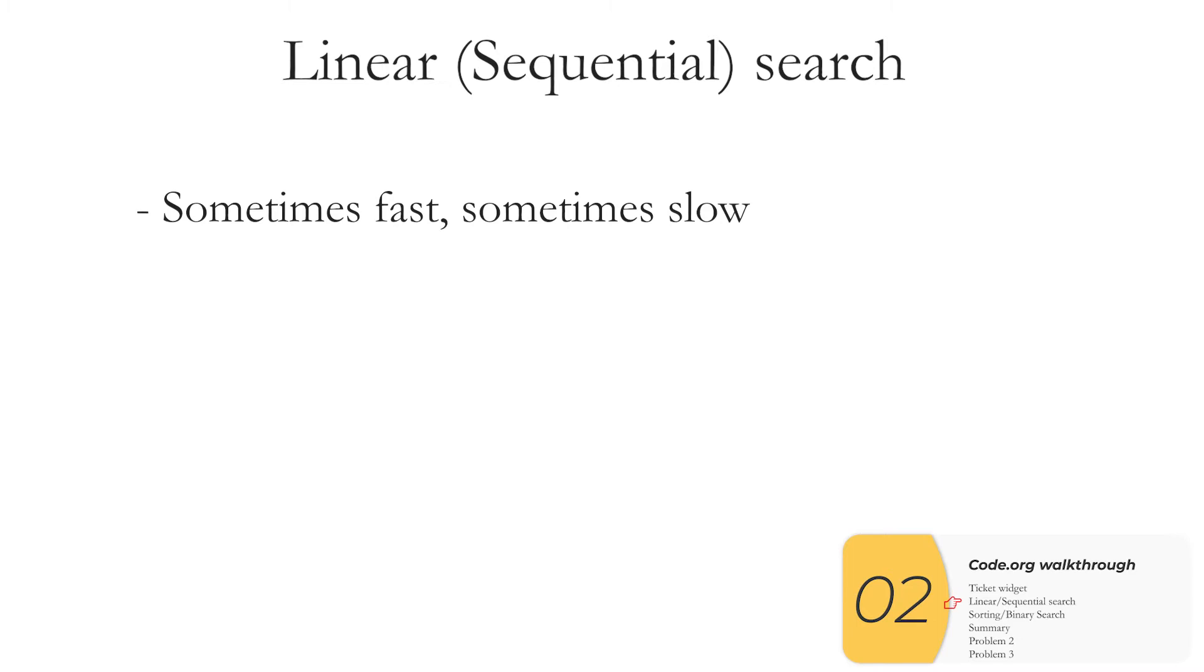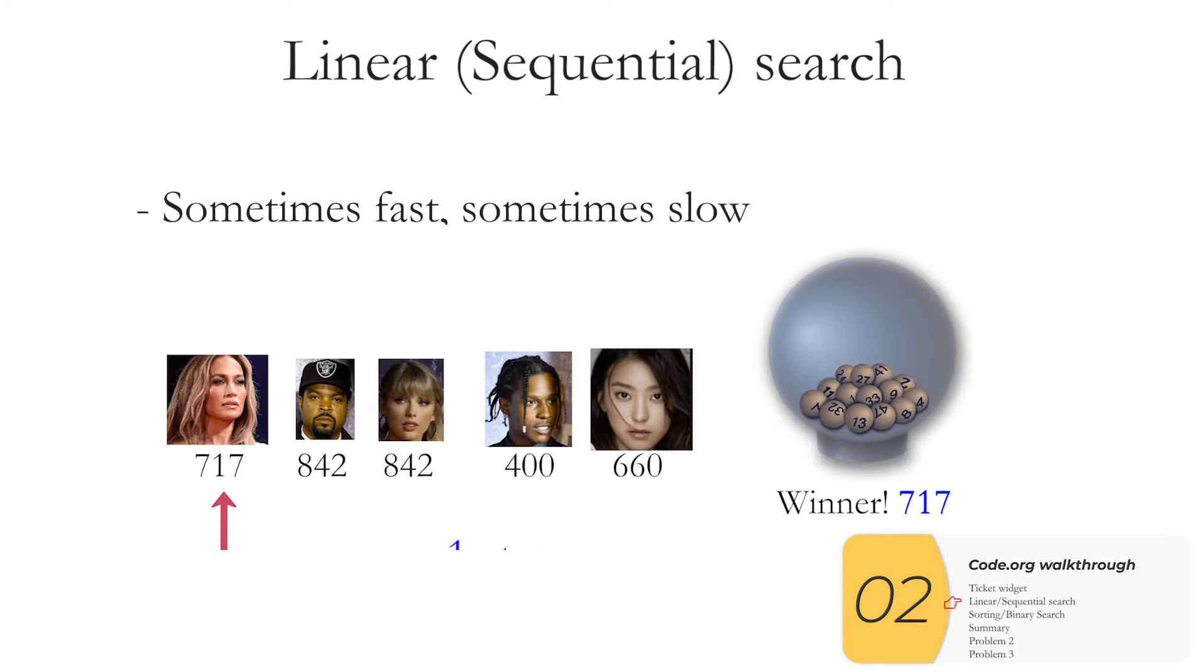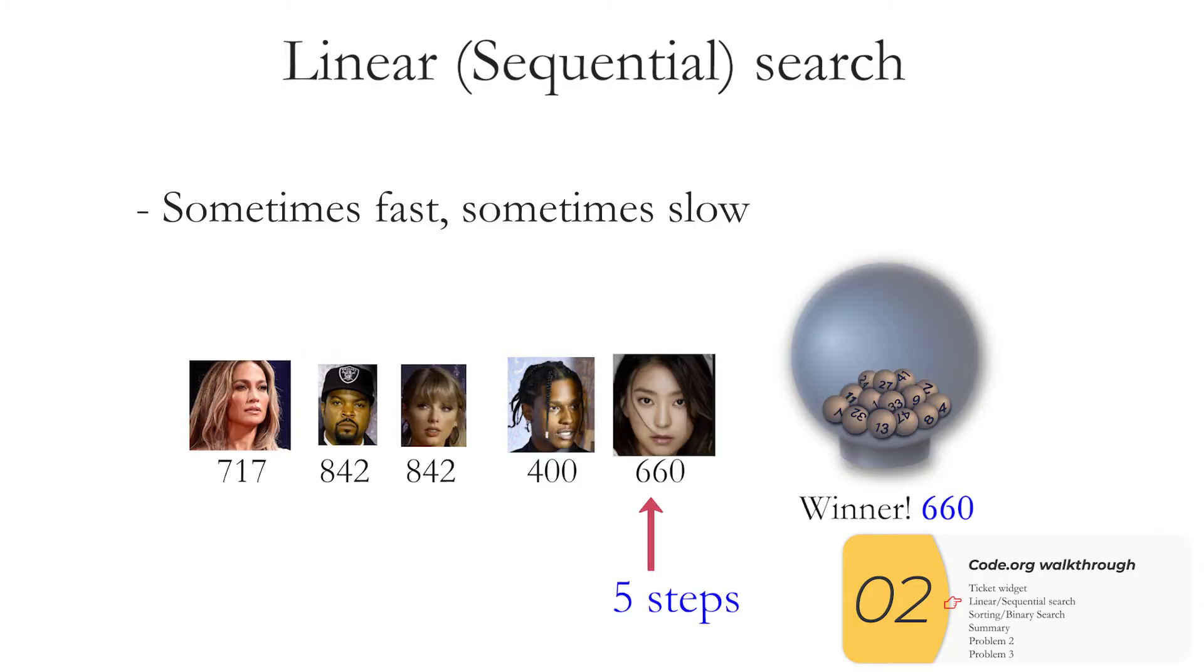So the first take home point about linear searches is that they can be fast with very few steps if your item's at the beginning and linear searches can be slow or take a lot of steps if what you're looking for is at the end.